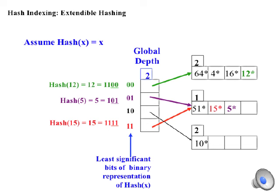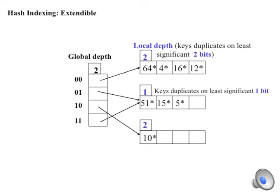Finally in the bottom bin, you'll see a decimal 10, which in binary coincidentally ends in 1, 0. Over each bin, you'll see what is called the local depth of the bin. The top bin has a local depth of 2, as does the bottom bin. The middle bin has a local depth of 1.